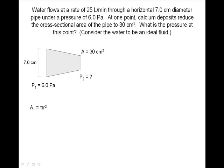The first thing we will do is find the cross-sectional area of the pipe at the first point. Remember to change the diameter into the radius. Here is the area at the first point.